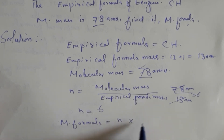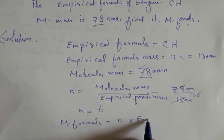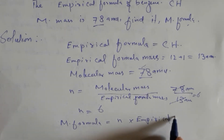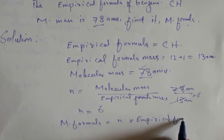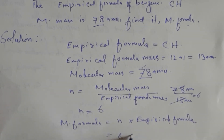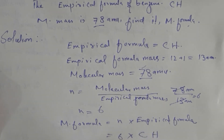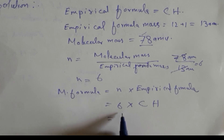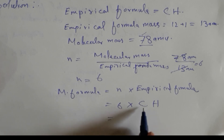Since N = 6 and the empirical formula is CH, the molecular formula = 6 × CH = C₆H₆, which is the molecular formula of benzene.